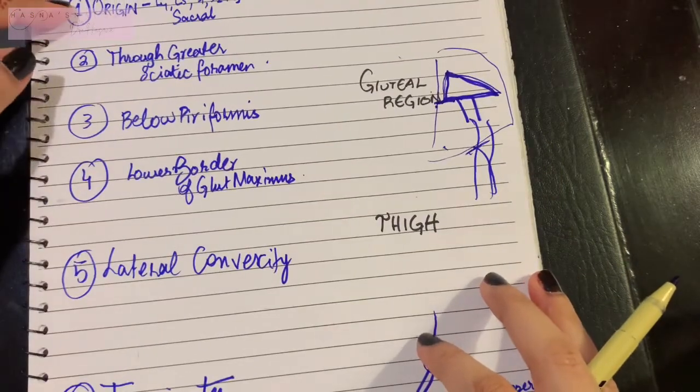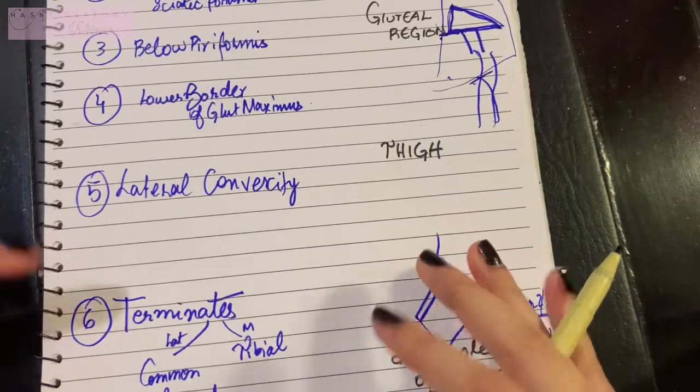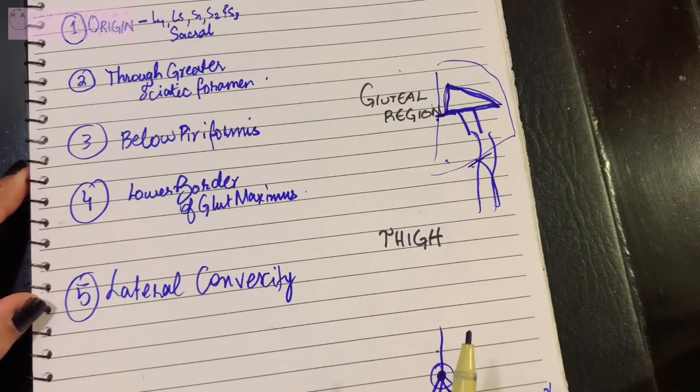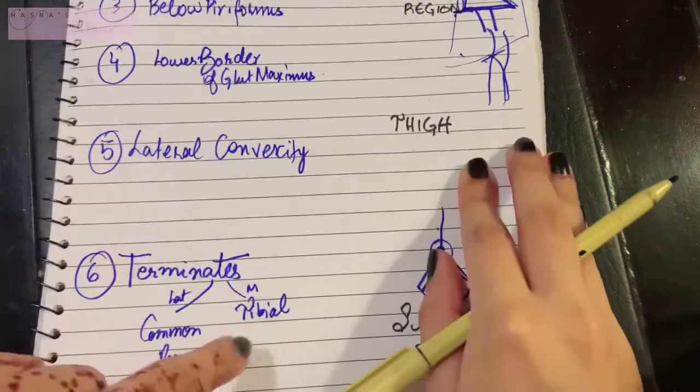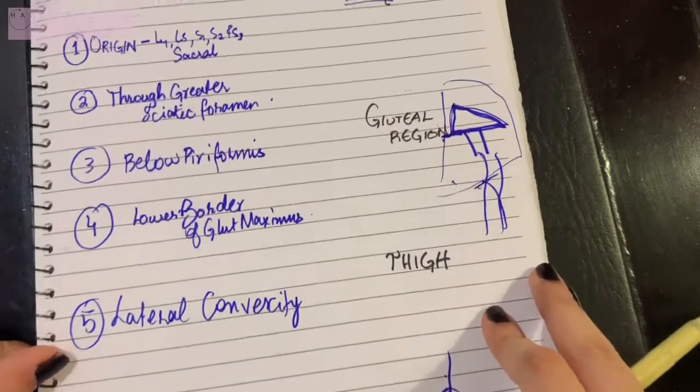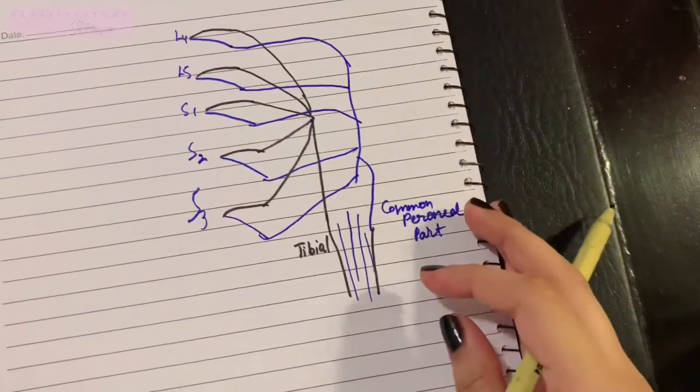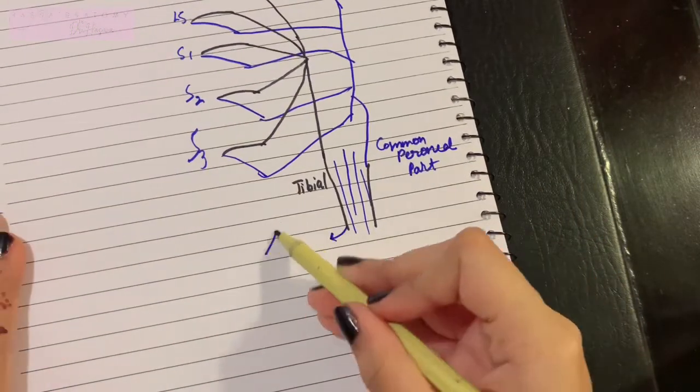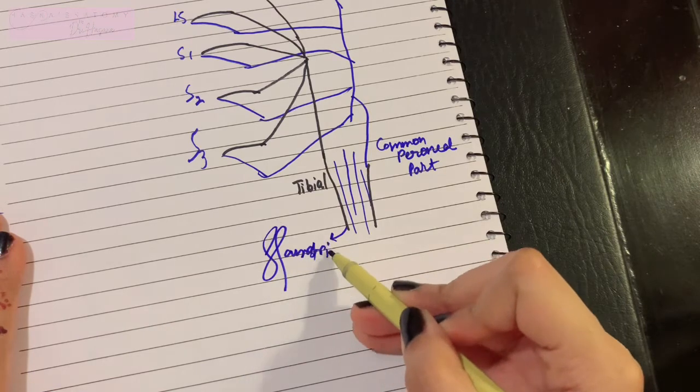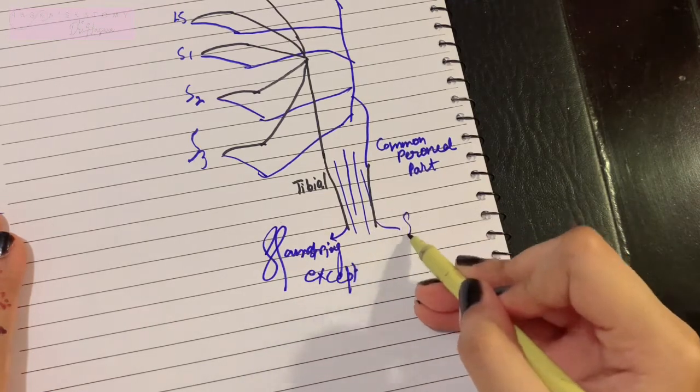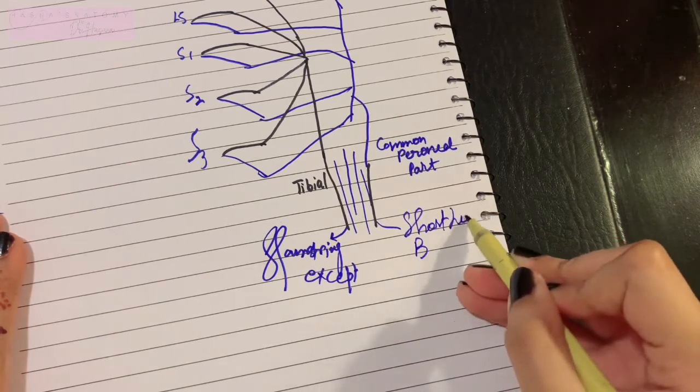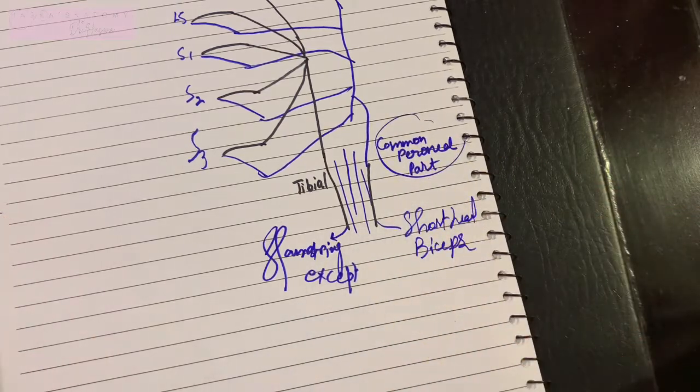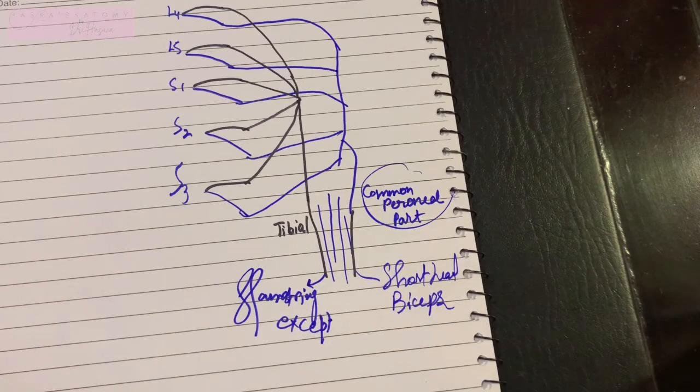What are its branches? Very easy. The sciatic nerve's tibial part—I'm not talking about the tibial nerve, but the tibial part of the sciatic nerve—is chiefly responsible for supplying all the hamstring muscles except for the short head of biceps, which is being supplied by the common peroneal part of the sciatic nerve.